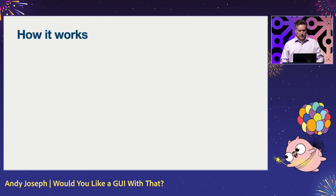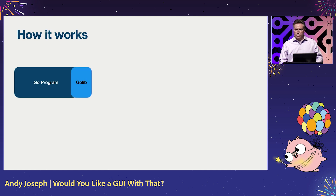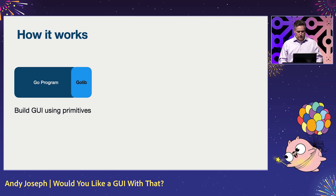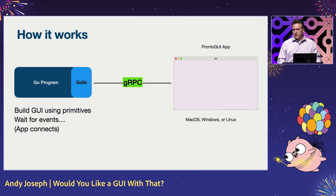So how does this work? You have your Go program, you import the GoLib, and you build the GUI using the primitives, then you wait for events. Meanwhile, you fire up your application, and it establishes communication through gRPC to the GoLib.